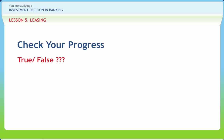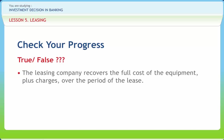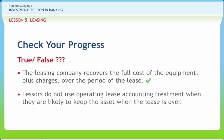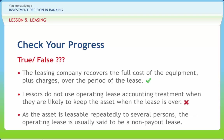Now let's see how much you have learned. State whether the following statements are true or false. Statement one: the leasing company recovers the full cost of the equipment plus charges over the period of the lease. Answer: True. Statement two: lessors do not use operating lease accounting treatment when they are likely to keep the asset when the lease is over. Answer: False. Statement three: as the asset is leasable repeatedly to several persons, the operating lease is usually said to be a non-payout lease. Answer: True.